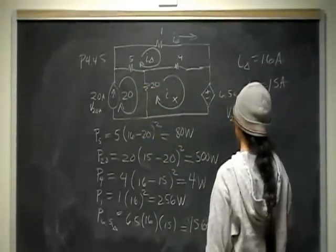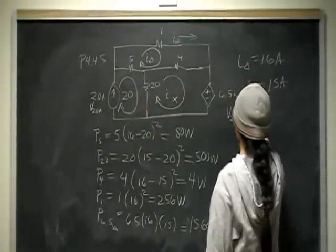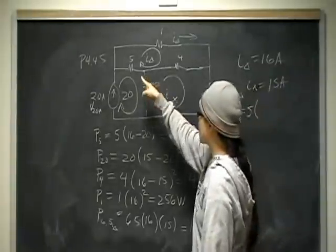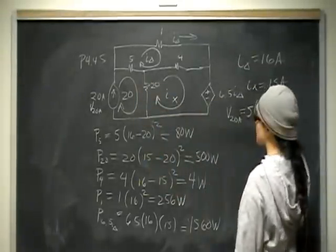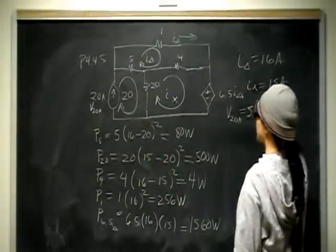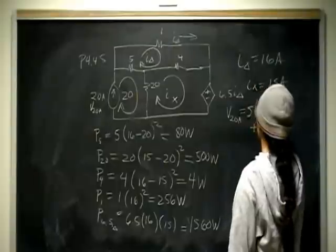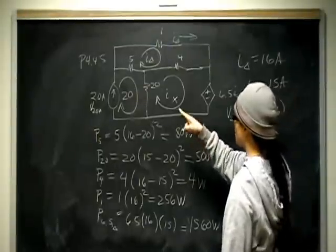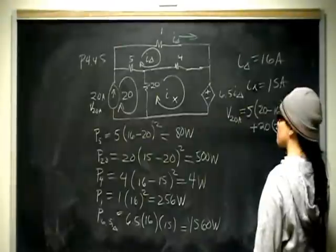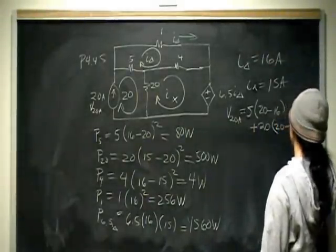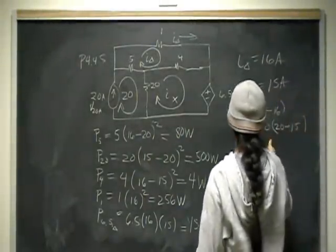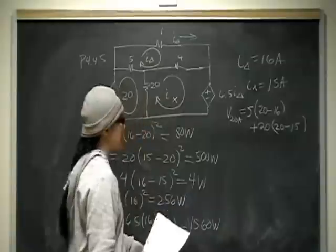So we're just going to do V equals IR. So that's going to be in that 5 ohm resistor times 20 amps minus I delta, which is 16, plus 20 times 20 amps minus I sub X, which is 15 amps. So I got voltage equals, so basically I did KVL, the sum of the voltages in that mesh must be equal to zero.